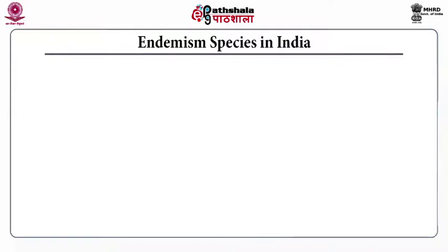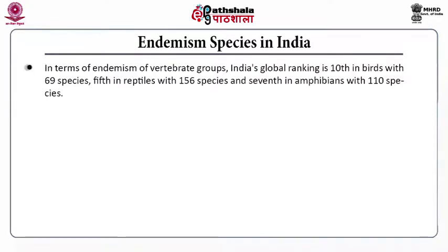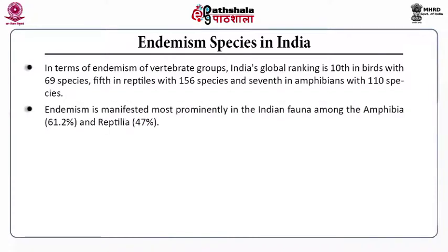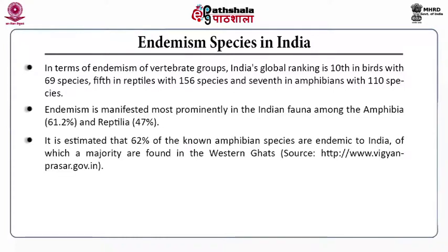In terms of endemism of vertebrate groups, India's global ranking is 10th in birds with 69 endemic species, 5th in reptiles with 156 species, and 7th in amphibians with 110 species. Endemism is most prominent in amphibia, including 61.2% of amphibians, and reptilia, including 47% of reptiles. It has been estimated that 62% of known amphibian species are endemic to India, of which the majority are found in the Western Ghats.